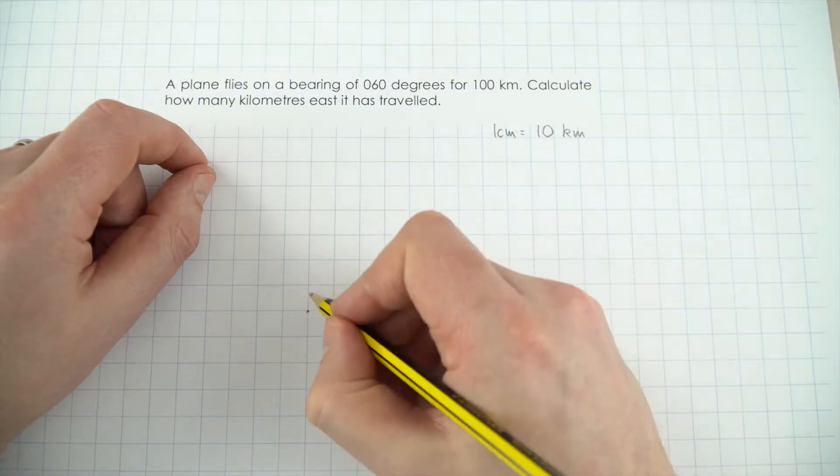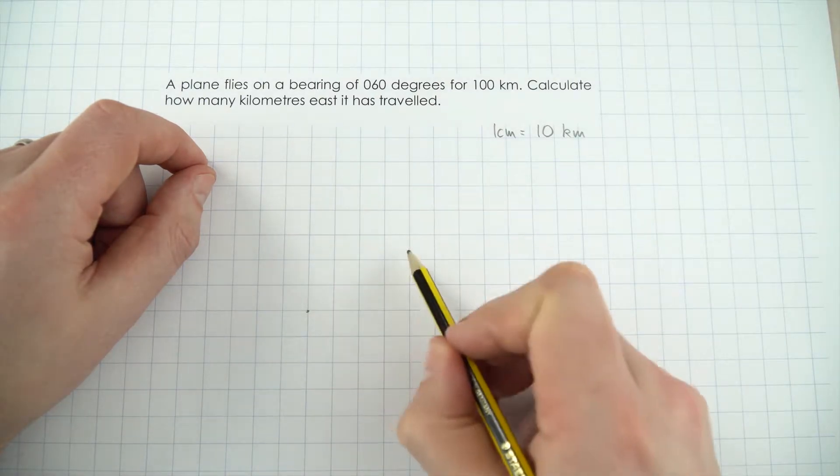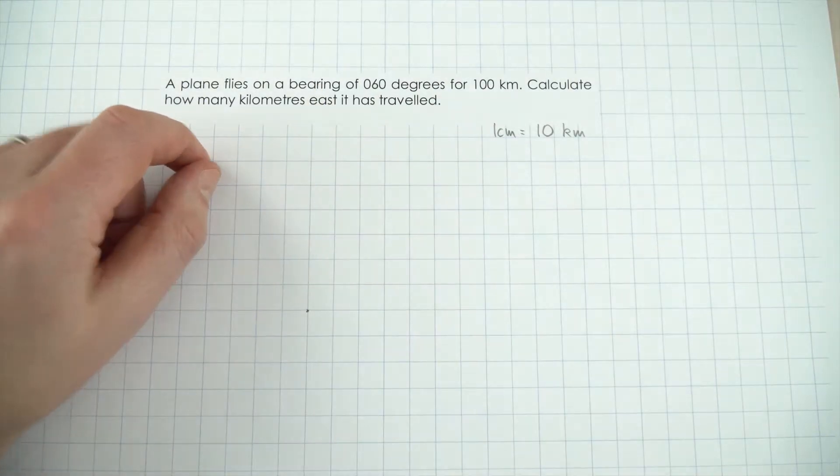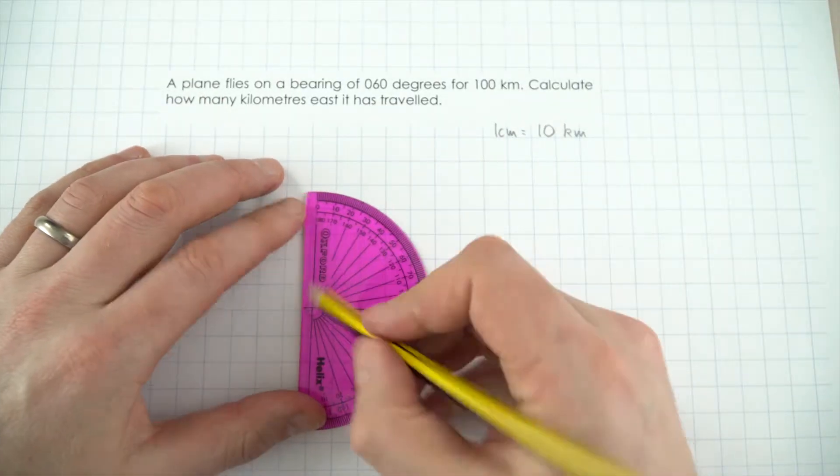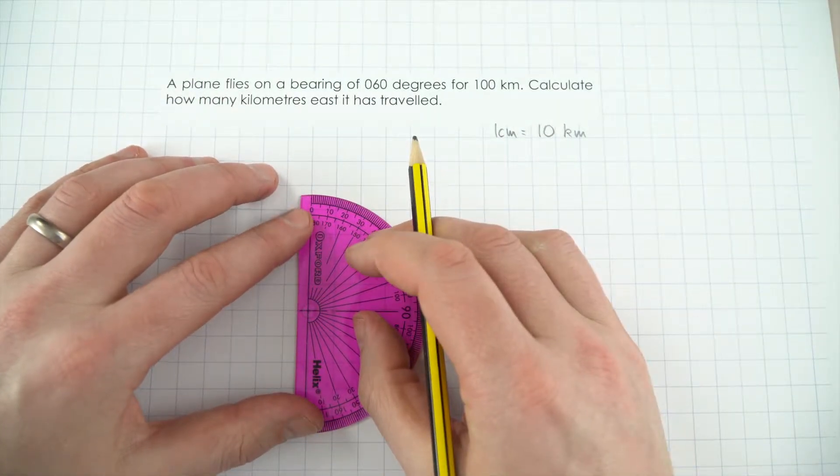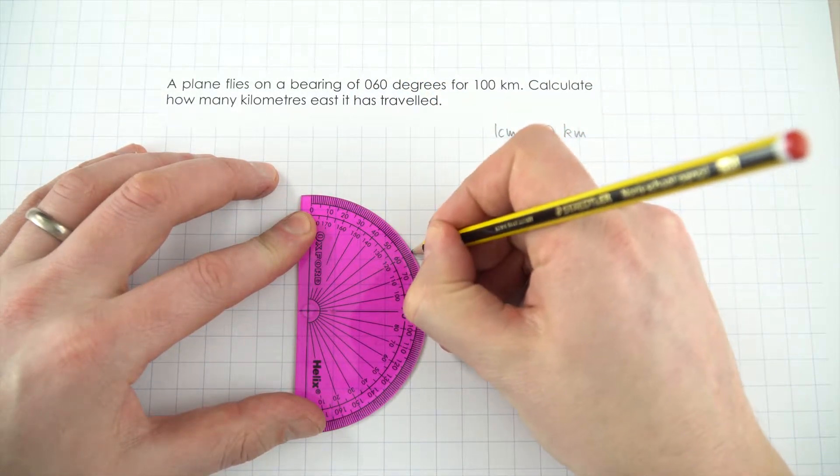But before I do that, I need to measure my angle, and it's 060, so that's 60 degrees clockwise from this kind of vertical direction up here. So, just getting my protractor, if I put the crosshairs on the dot, which is where my diagram's going to start, I'm just going to mark off 60 degrees, like so.